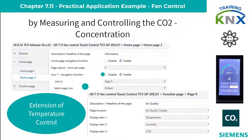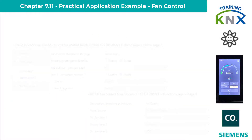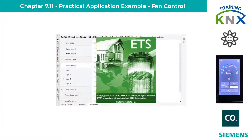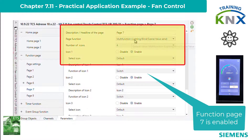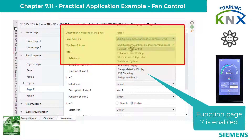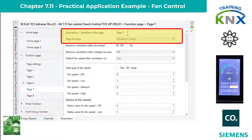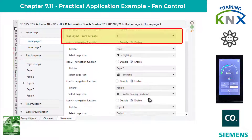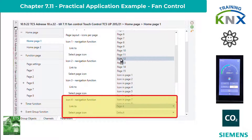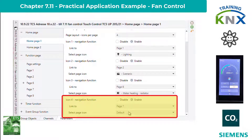To do this, I activate function page 7, set its function to Ventilation System, and assign a sensible text description which is then shown on the display. This page is integrated on main page 1 as the 4th call, with the corresponding symbol — the 4th fan.